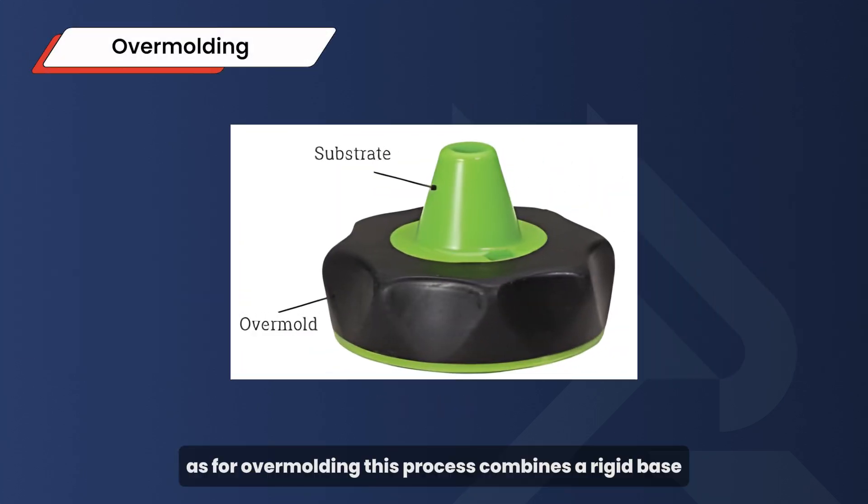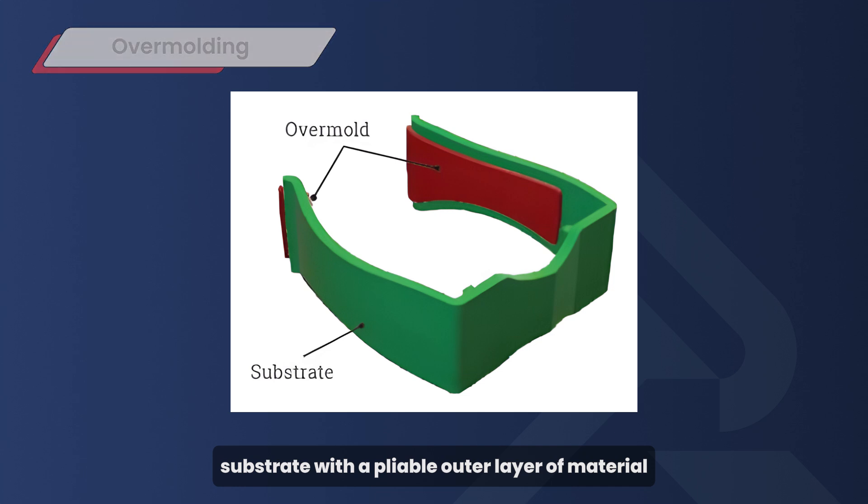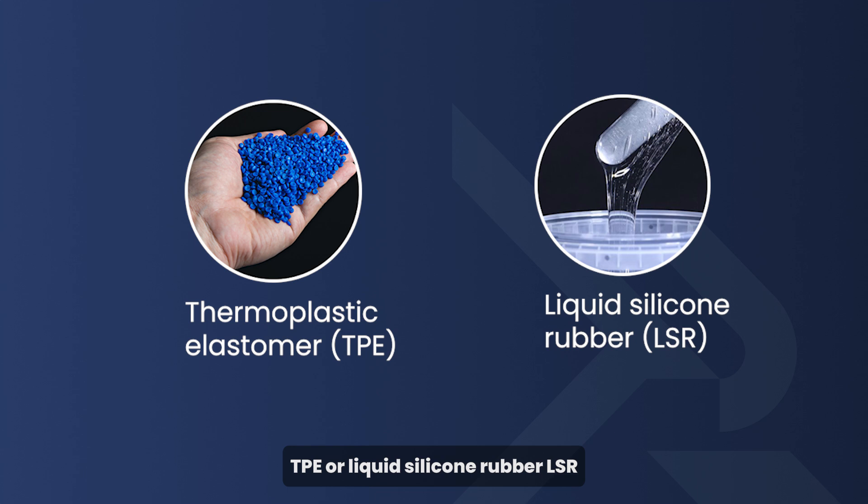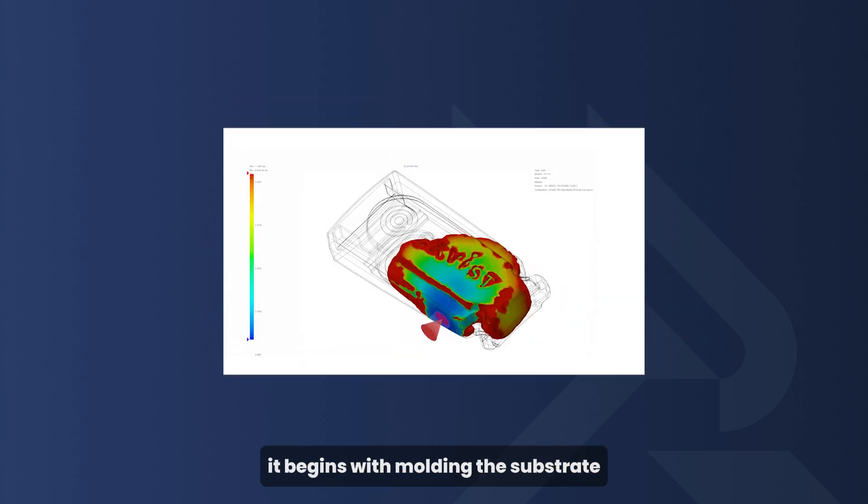As for overmolding, this process combines a rigid base substrate with a pliable outer layer of material, such as thermoplastic elastomer (TPE) or liquid silicone rubber (LSR). It begins with molding the substrate, typically using a more rigid material as the base.